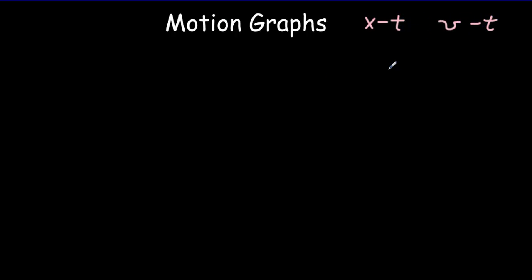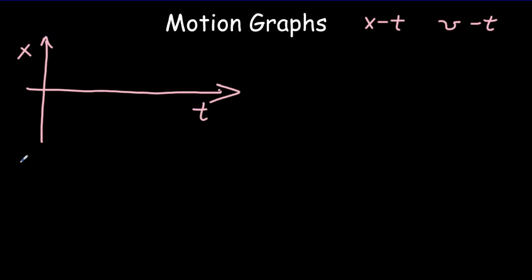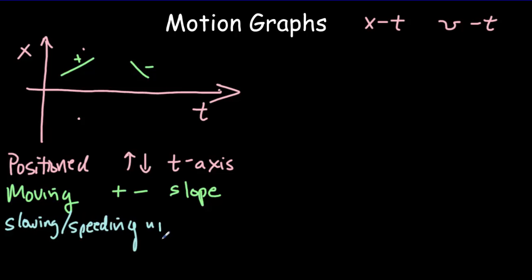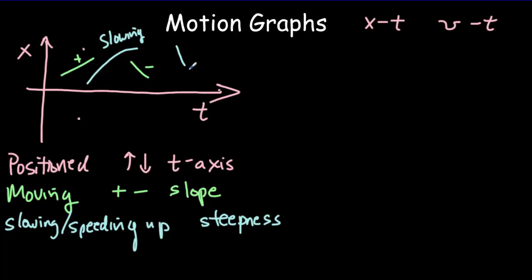The most important things for motion graphs are how to read a position-time (or displacement-time) graph and a velocity-time graph. On a position-time graph, whether the object is to the left or right is indicated by whether the curve is above or below the time axis. Which way it's moving is shown by a positive or negative slope. Whether it's slowing down or speeding up is shown by the steepness — if the curve is getting less steep, the object is slowing down.